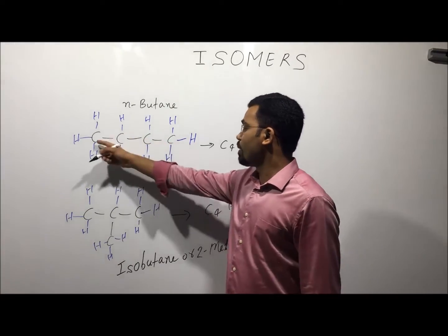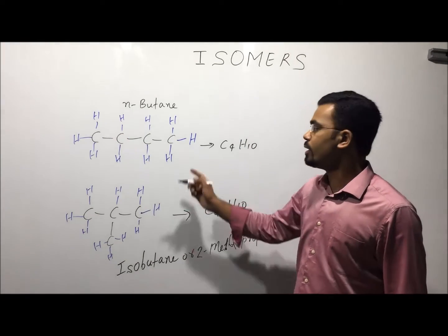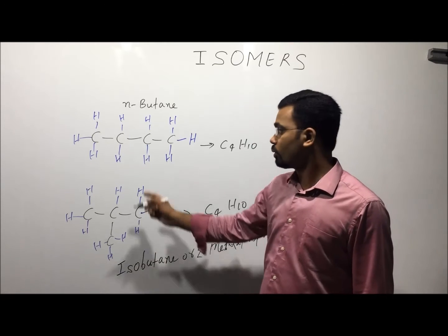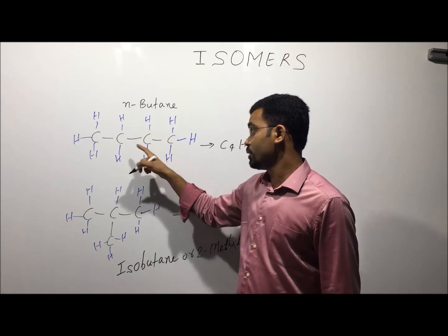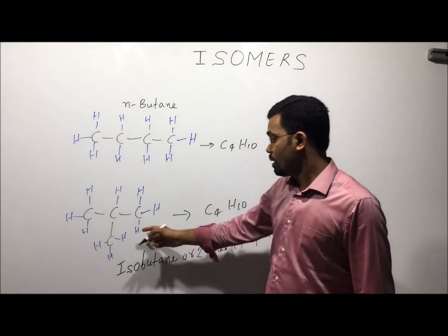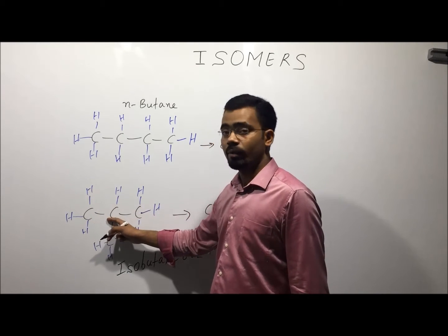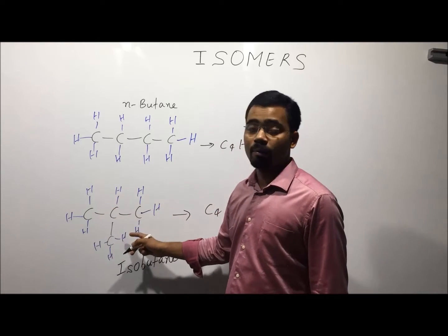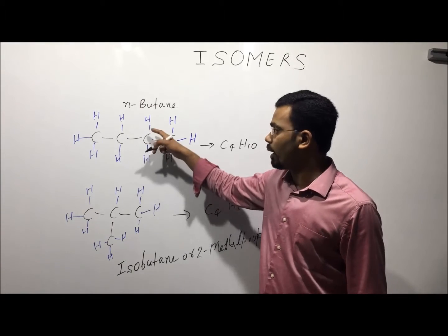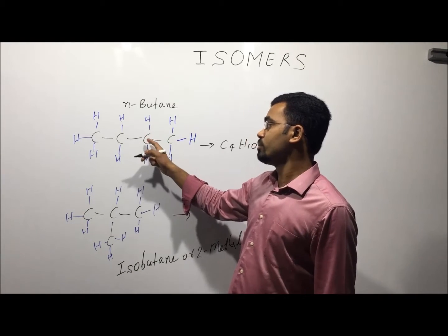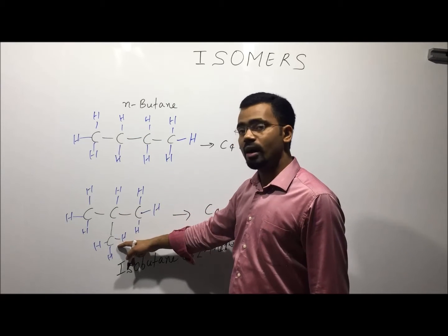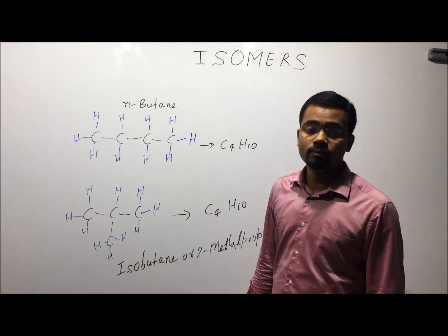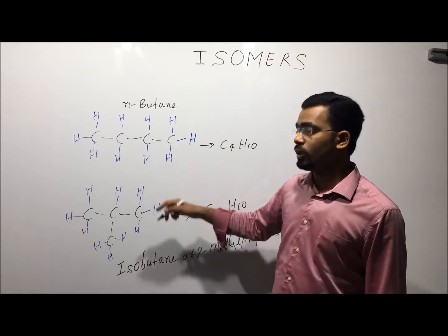Let us see the connectivity. In normal butane, the terminal carbon is bonded with 3 hydrogens and 1 carbon atom, and the middle carbon is bonded with 2 hydrogens and 2 different carbon atoms. In isobutane, the terminal carbon is bonded with 3 hydrogens and 1 carbon, but the middle carbon is bonded with 3 carbons and 1 hydrogen. So the connectivity is different — both compounds have the same molecular formula but different connectivity, therefore both are isomers.